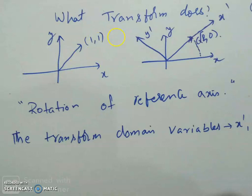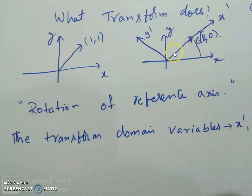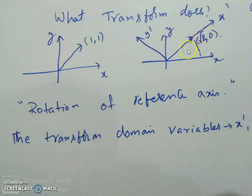What a transform does is rotate these reference axes. The x and y become x-prime and y-prime after rotating by an angle theta such that the new x-axis gets aligned with the vector. Now this value becomes (root 2, 0), because the length of the vector is root 2. Since we are only doing rotation, the length of the vector should not change. The coordinates got changed — this is in the original domain, and this is in the transform domain; the reference axis got rotated.